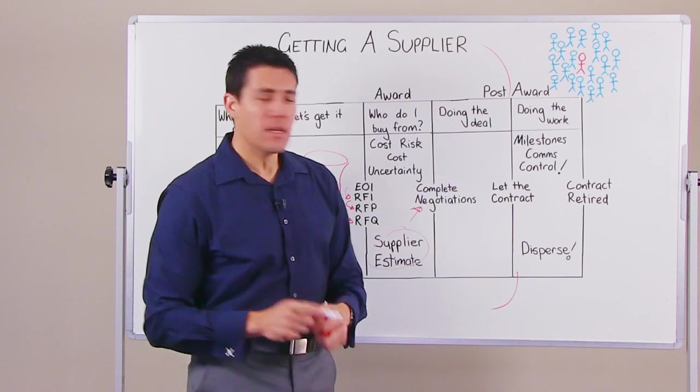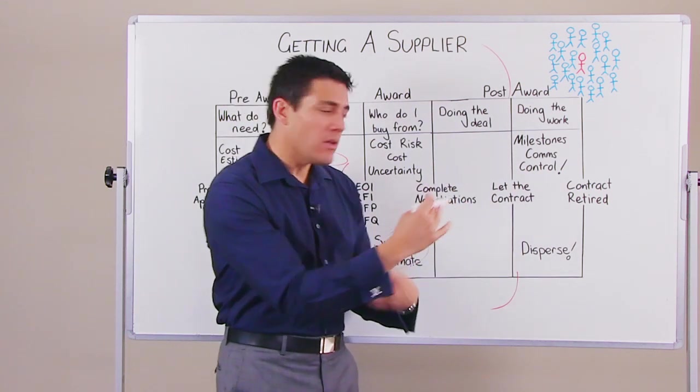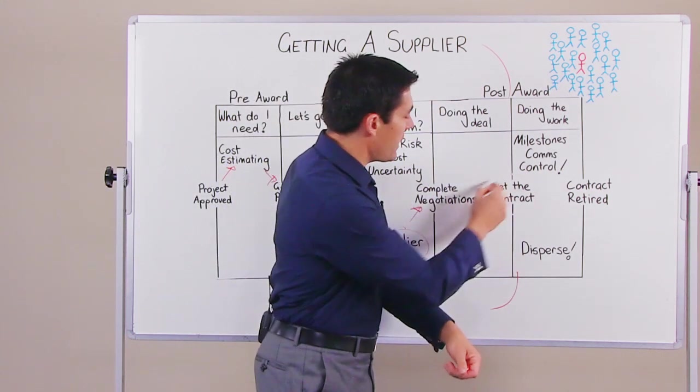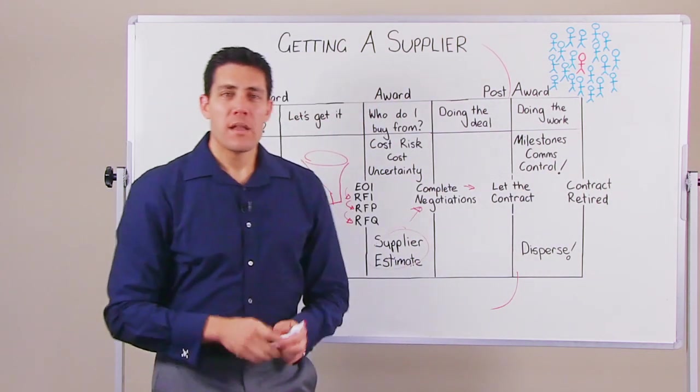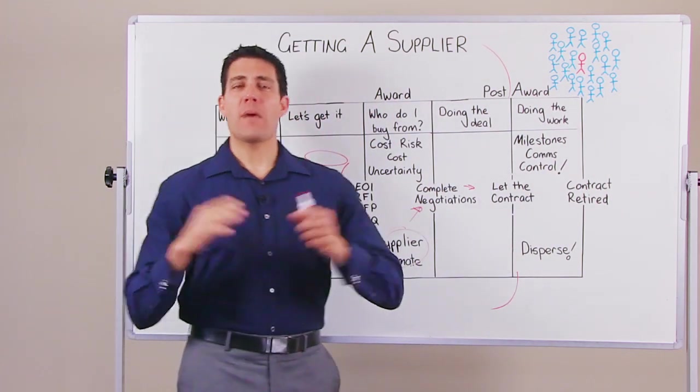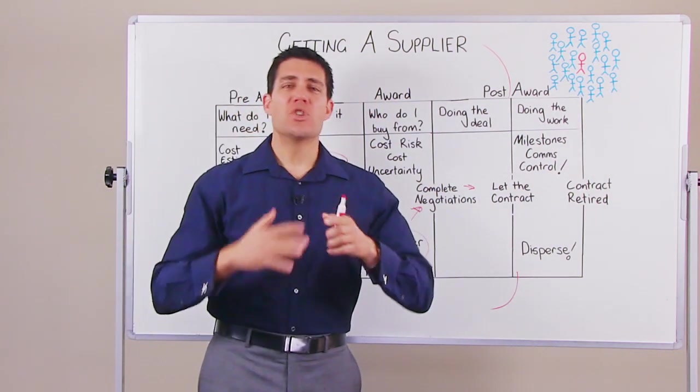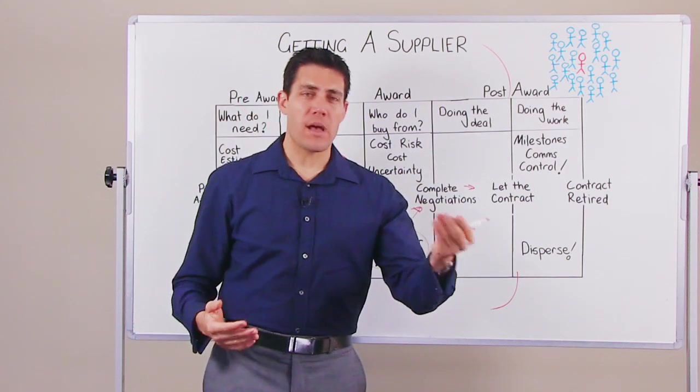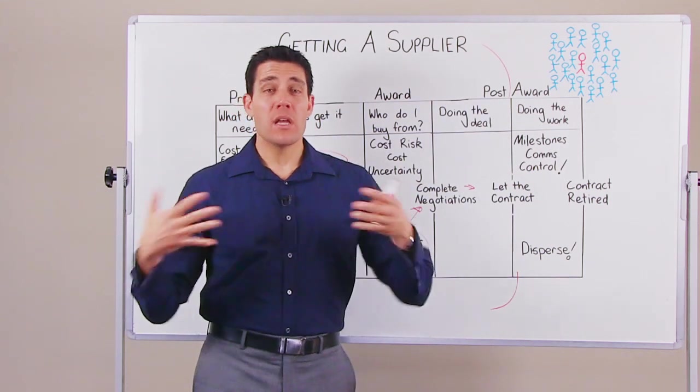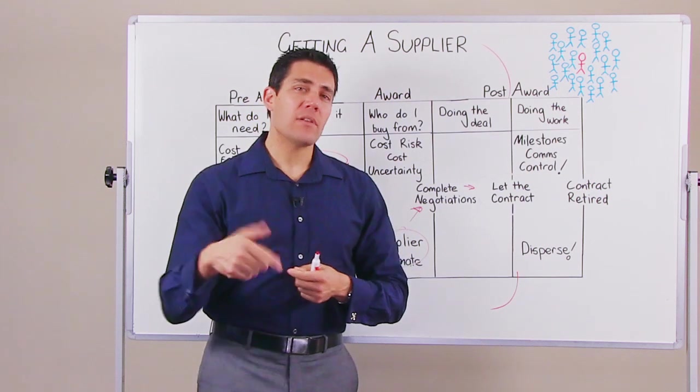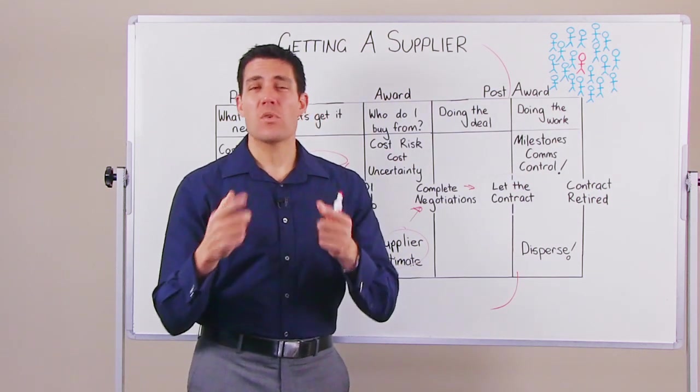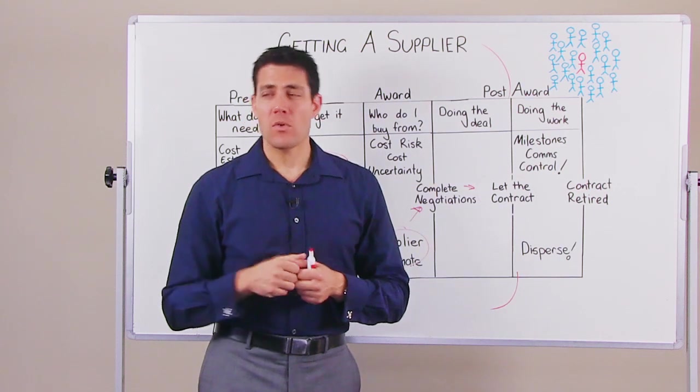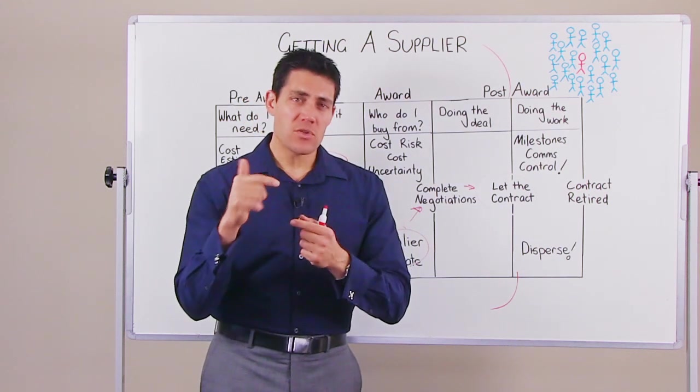Once the negotiations are completed and the contract terms are outlined, you can then let the contract to the seller. What this looks like is usually you'll have a master agreement which talks about the general behaviors of how you as a buyer and the seller are going to operate in doing business together, and then you'll have a bit more detailed, what's called a statement of work or maybe a terms of reference or a schedule.